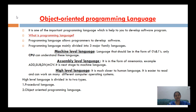Assembly level language is in the form of mnemonics. Examples of mnemonic codes are ADD, SUB, DIV, MOV, MUL, etc. It is the next stage to machine level language and is also known as middle level language.